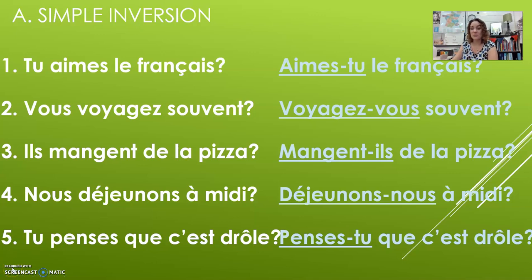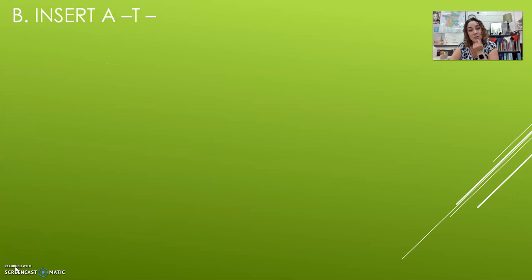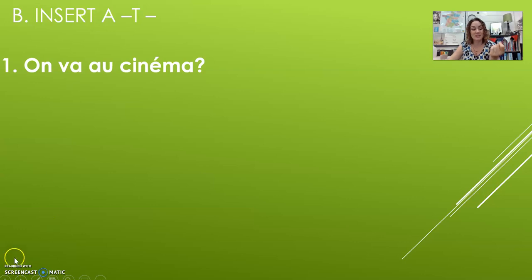Hopefully those were easy and gave you a basis to start from — you flip your subject and your verb, that's it. Now, sometimes when you flip the verb and subject, inverting them means you have lots of vowels hanging out side by side. Let me show you an example.